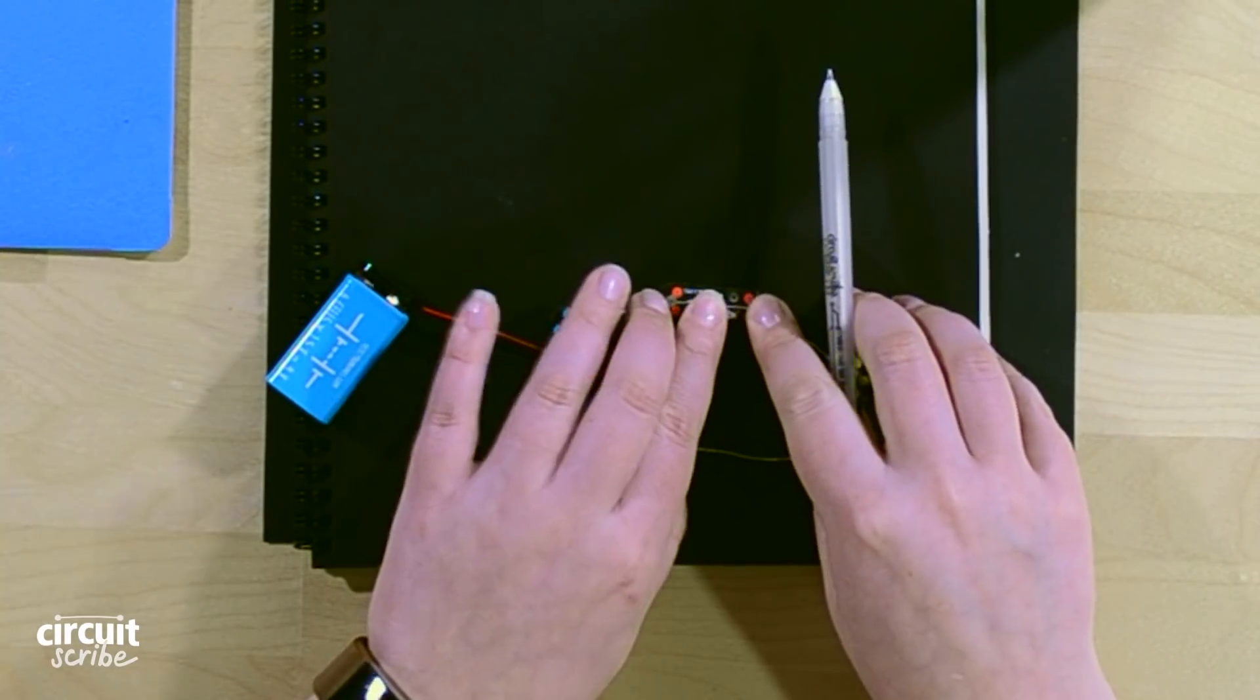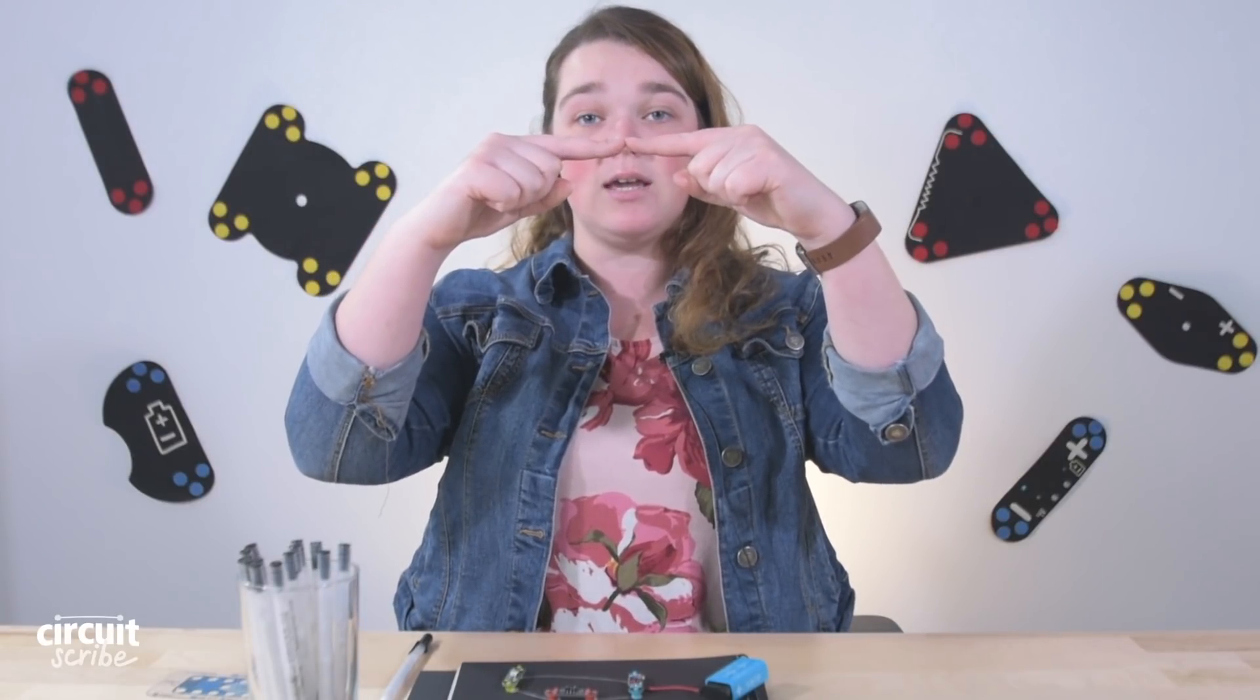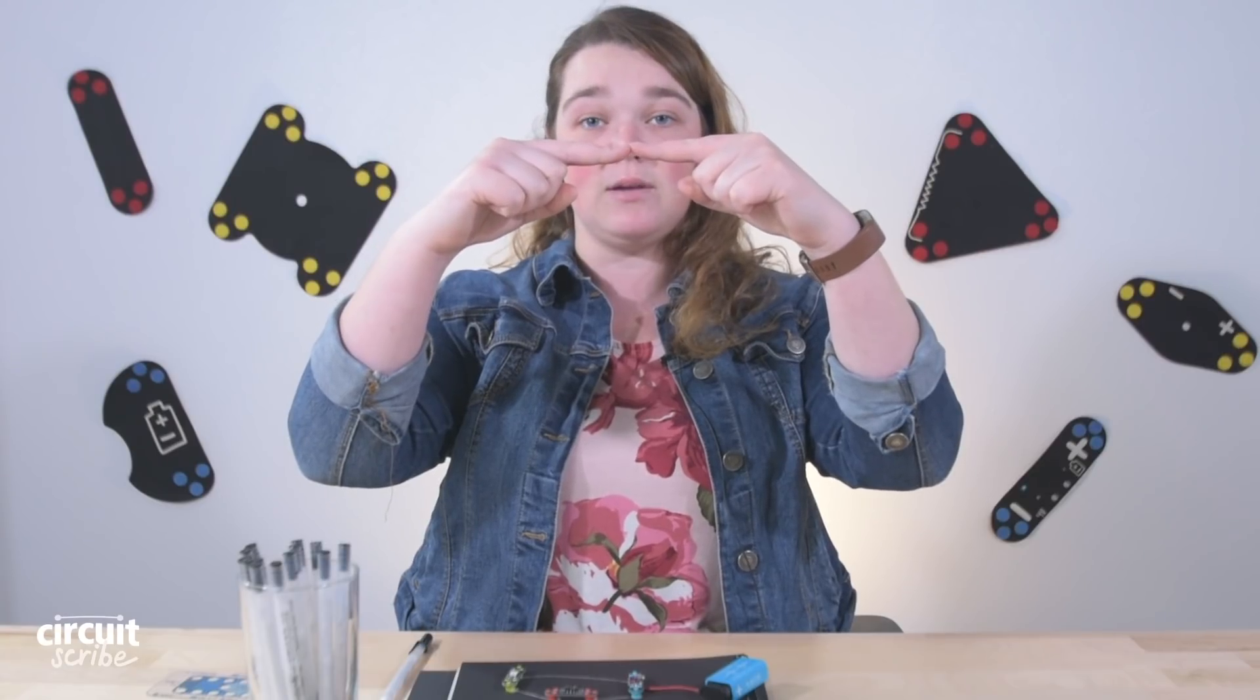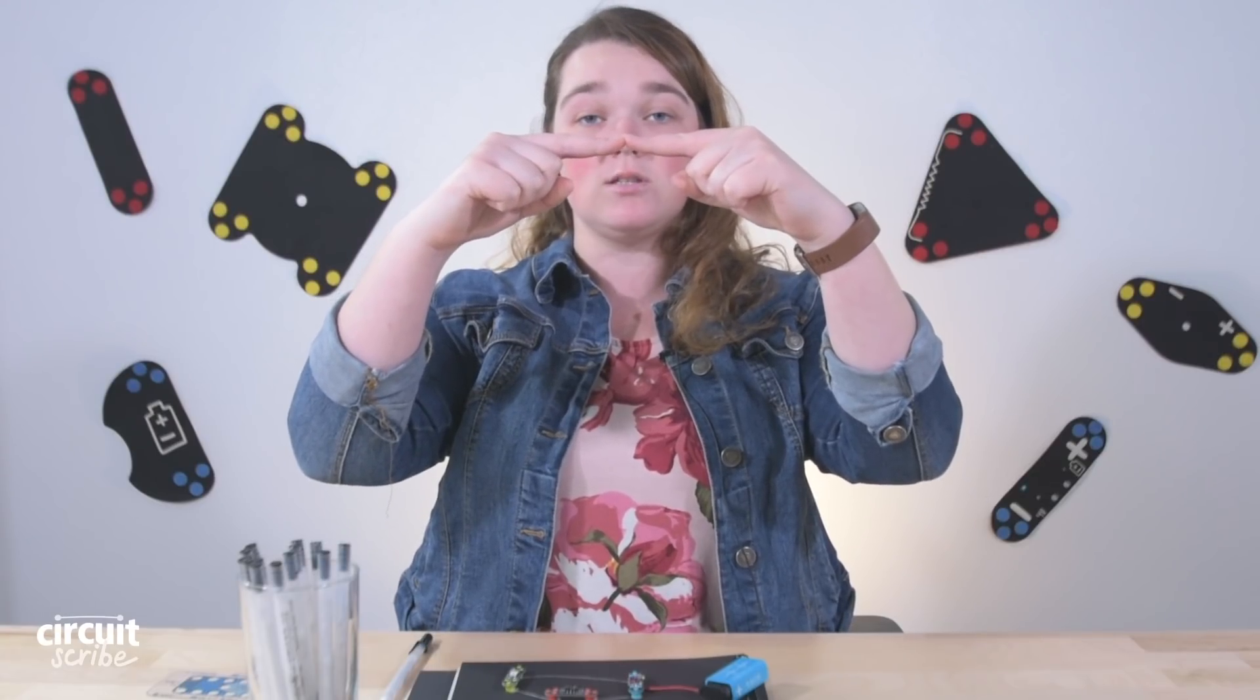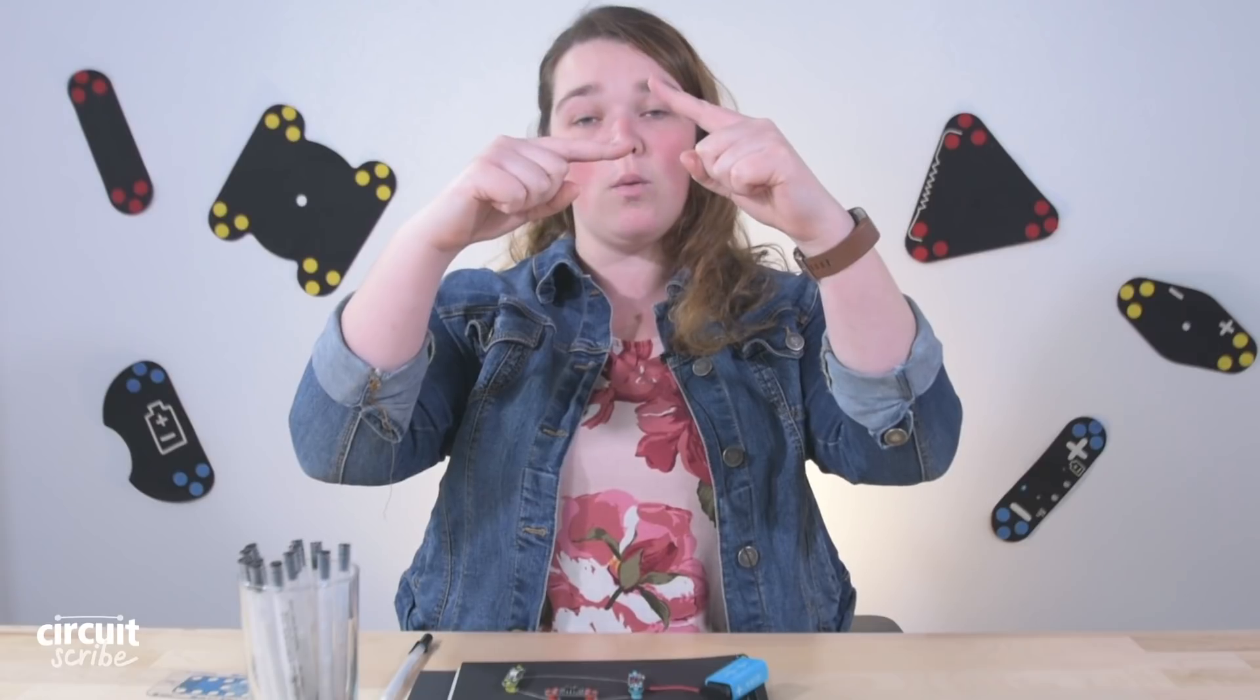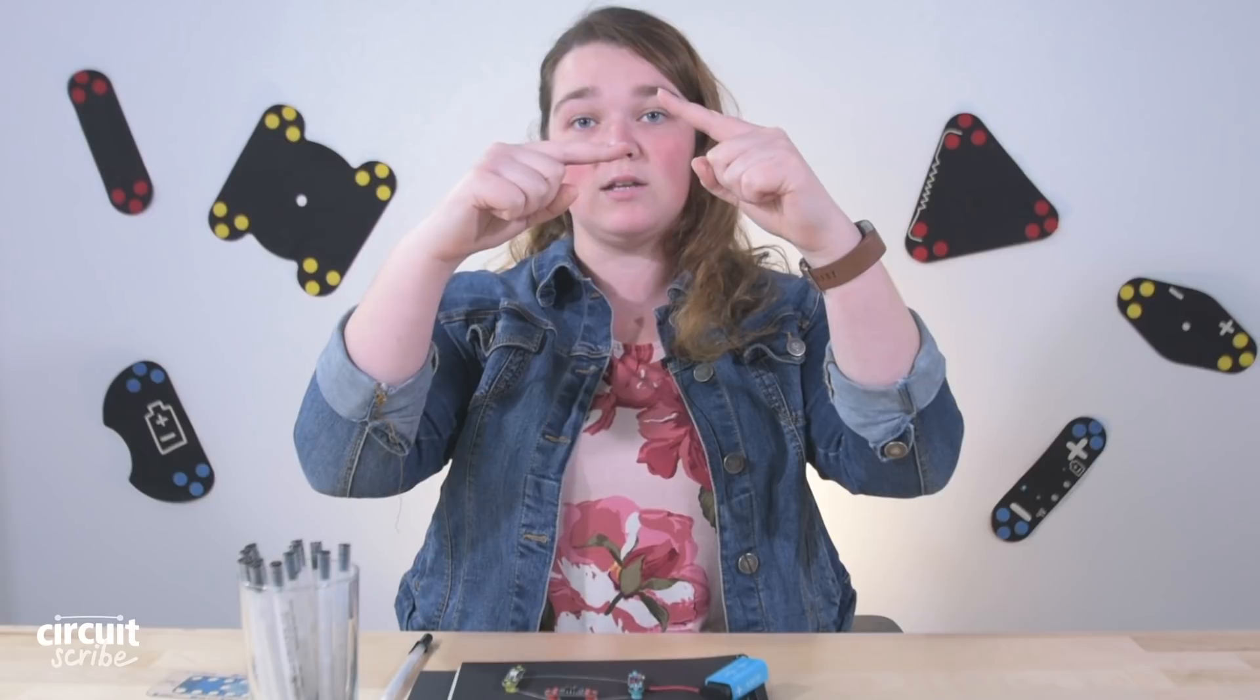When the switch is off, we have an open circuit. So remember the diagram we drew before, when the switch was like this, a continuous line, we were able to get current from the battery to the LED because we had a closed circuit. When the switch is in the off position, we have an open circuit and current can't make its way to the LED because there's no way to go through the switch. It's an open switch.